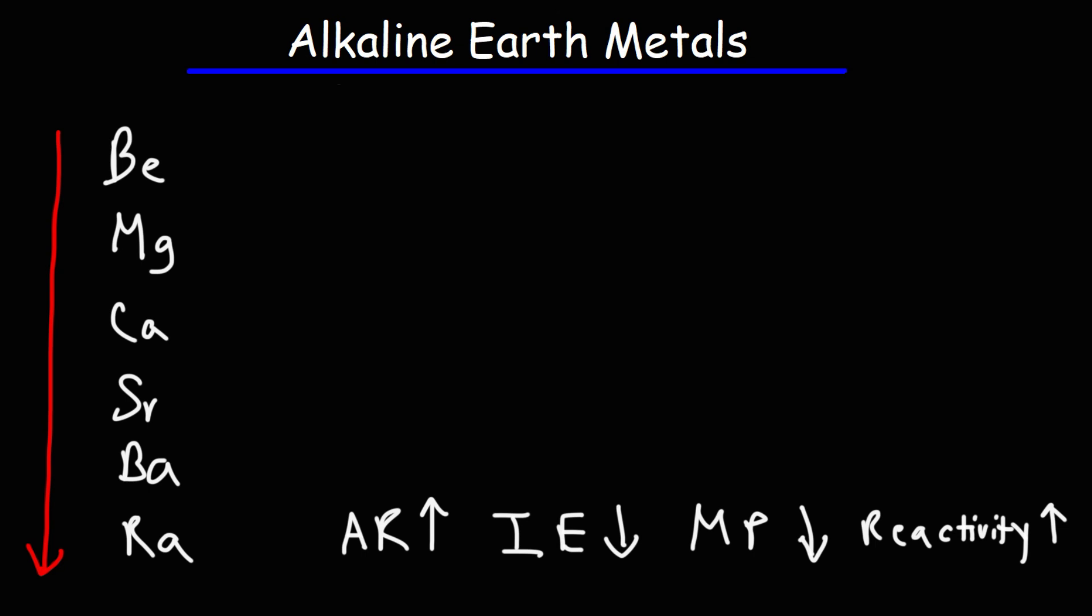Now alkaline metals, because they like to give away electrons, are reducing agents. They're strong reducing agents. Metals tend to be reducing agents. Non-metals tend to be oxidizing agents. Oxidizing agents like oxygen, fluorine, and chlorine like to take electrons, but reducing agents like to give away electrons. Alkaline metals are one of the strongest reducing agents. After that comes alkaline earth metals.